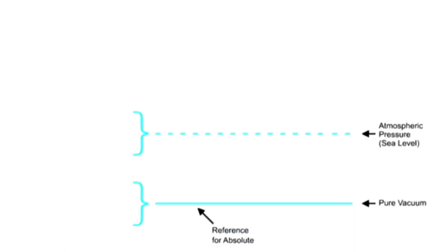Absolute pressure scale uses the absence of pressure, referred to as absolute zero, as a reference. In a pure vacuum, absolute zero occurs, and pressure readings can only be positive.